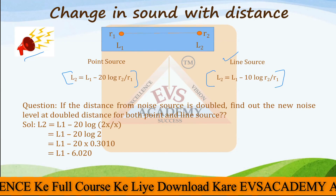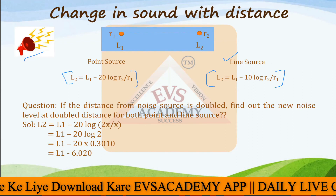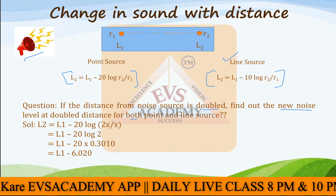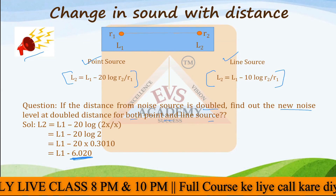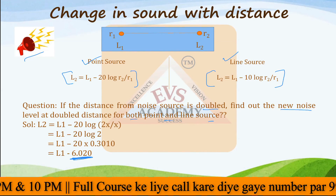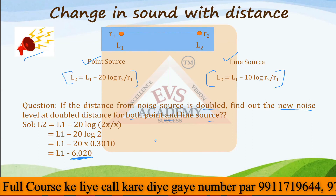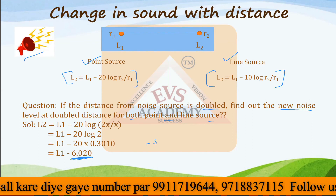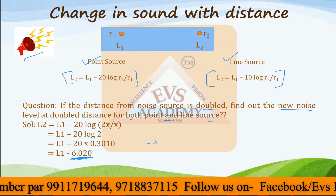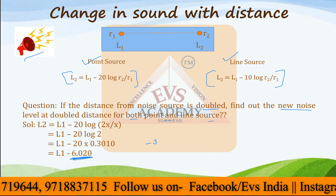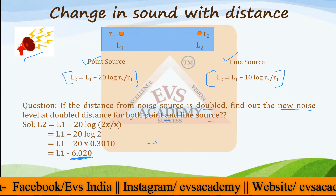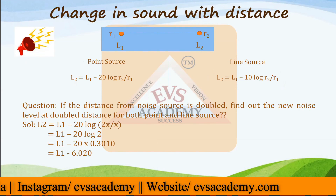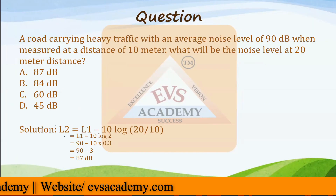In the line source, we have multiple sources. When the distance from the noise source is doubled, the new noise level at double distance decreases by six decibels for a point source and three decibels for a line source. For any other distance, this formula can be used to calculate the new sound value, and you can observe the changing behavior of the sound. This question has also been solved.